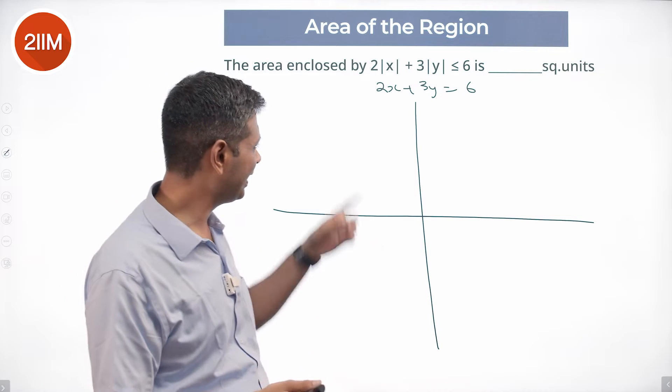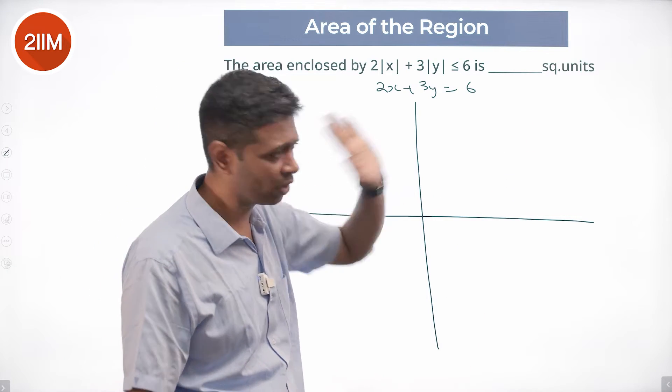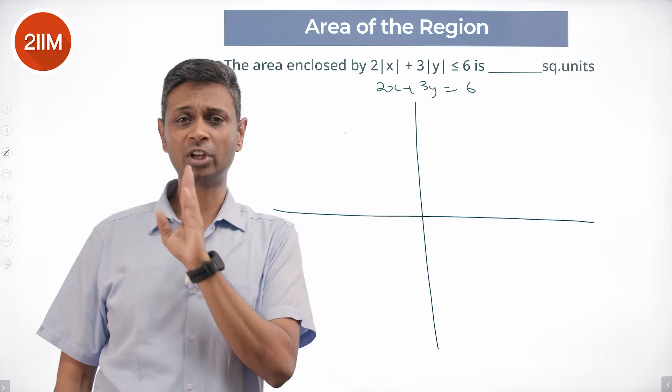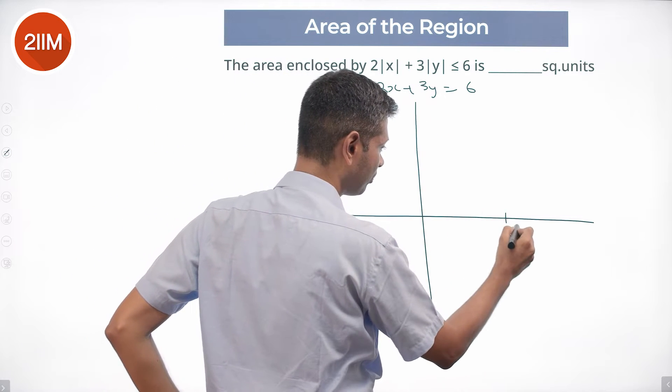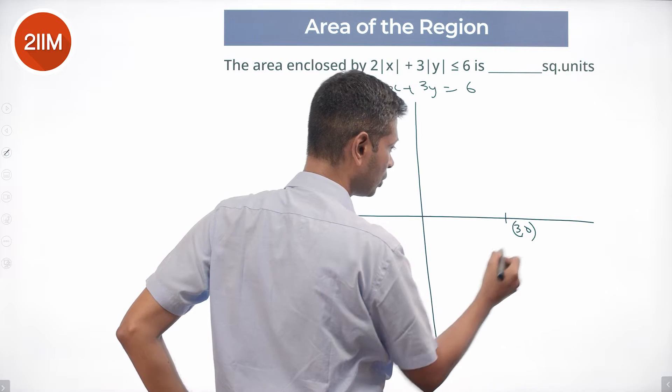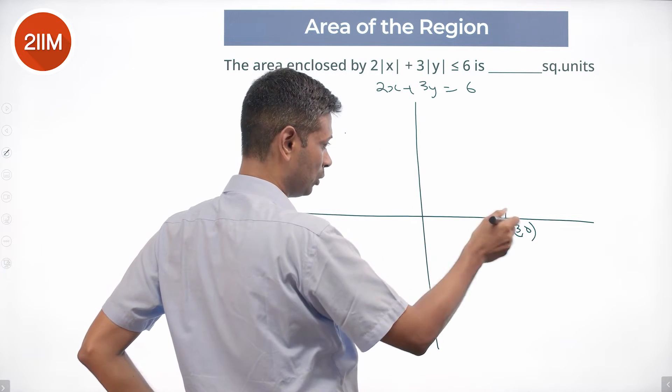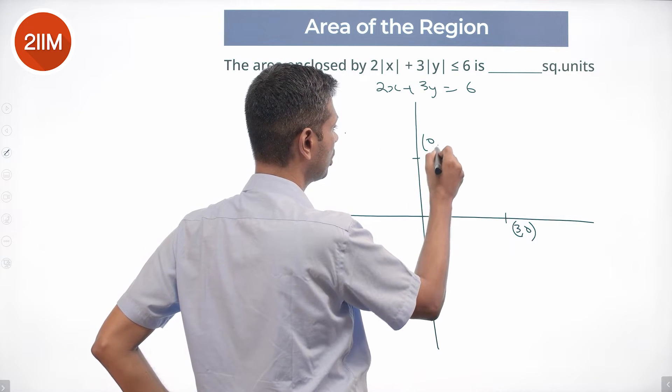I'm going to forget these three quadrants, I'm going to deal only with this quadrant. Then think about 2x plus 3y equals 6. Let's say, hey nice, then x equals 3, 3 comma 0, y is 0 that will work. 0 comma 2 will work.